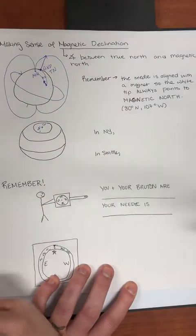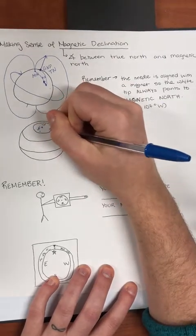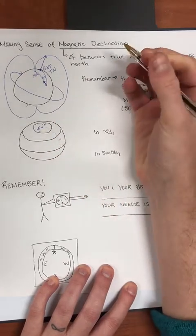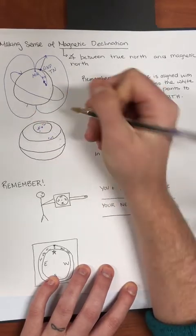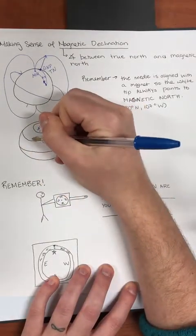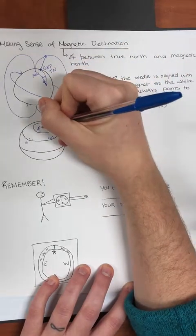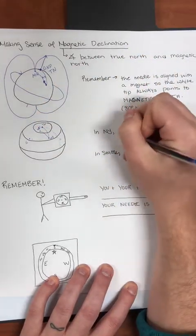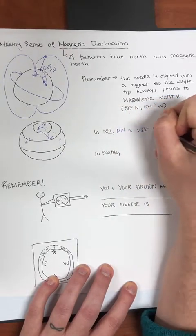Magnetic north is just south of true north because it's at about 80 degrees north. Let's think about what might be the case in New York or Seattle. Drawing zero degrees longitude as a dashed line, New York plots somewhere here and Seattle way over here — not to scale. In New York, the direction to true north and the direction to magnetic north are different, with magnetic north being west of true north.